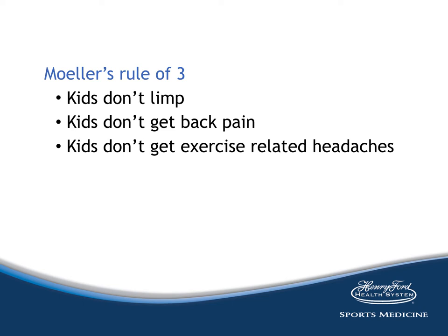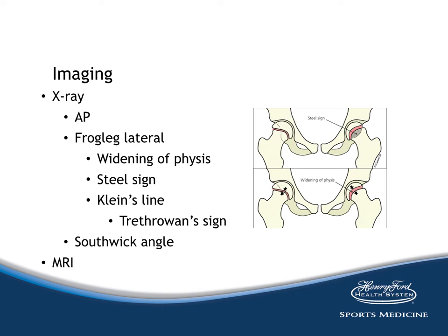This brings us to Muller's rule of three when it comes to kids and exercise: kids don't just limp, they don't just get back pain, and they don't get exercise-related headaches. Any time a child presents with any of these things, we have to be concerned that something more significant is going on. In kids, if they present with a limp and any pain from the groin down to the knee, we have to consider the hip as the primary potential cause. After careful history and physical examination, we move on to imaging. X-rays should include an AP view of the pelvis and a frog-leg lateral. Things to look for include widening of the physis, the Steel sign, Klein's line and Trethowan sign, Southwick angle, and MRI may also be beneficial.